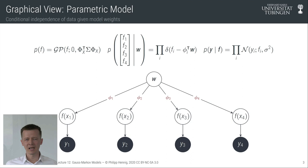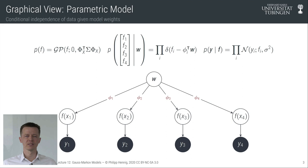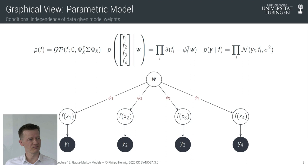In lecture 9, as we expanded towards non-parametric models with infinitely many degrees of freedom, we encountered the Gaussian process. At least one way of looking at it is that these models do not keep track of an explicit set of weights anymore. One other way is that we expand the set of weights towards an infinite set, and under both views it makes more sense to reason about the function values themselves rather than some latent weight space.